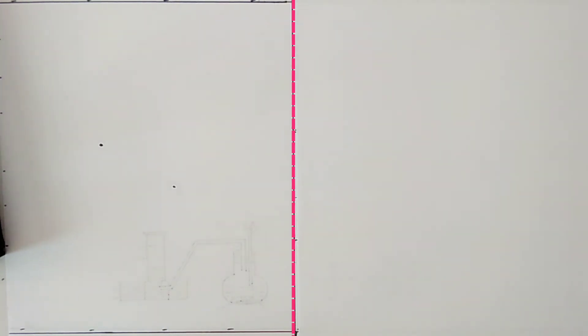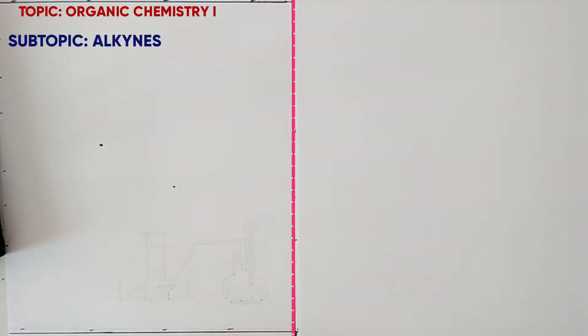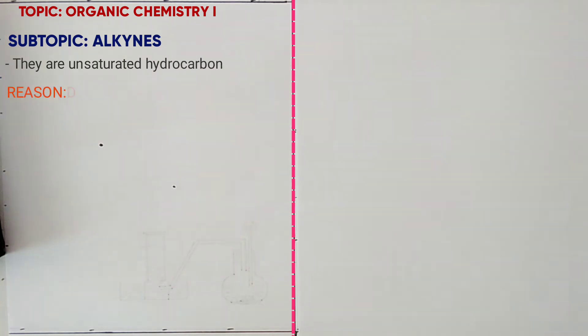Welcome learners. Today I want to look at organic chemistry 1, particularly alkynes. Alkynes are unsaturated hydrocarbons due to the presence of a triple bond.